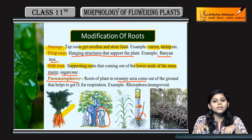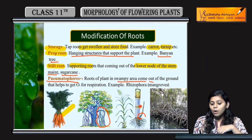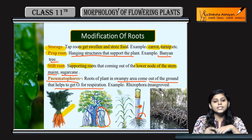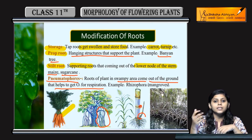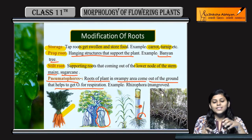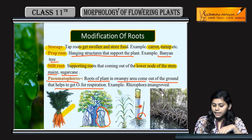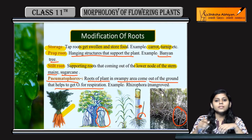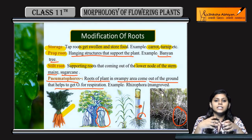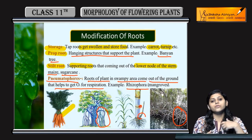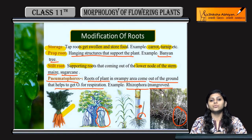Next is pneumatophores. Swampy areas mein soil mein aeration kam hoti hai, oxygen kam hoti hai, toh ye roots out of the ground nikalti hai so that oxygen mil sake unhe respiration ke liye. In plants ki roots jo swampy areas mein hoti hai, woh underground se aerial part ki taraf grow karti hai aur wahan se oxygen leti hai, jis ki wajah se woh respiration kar sake. Ye hoti hai Rhizophora mangroves mein.